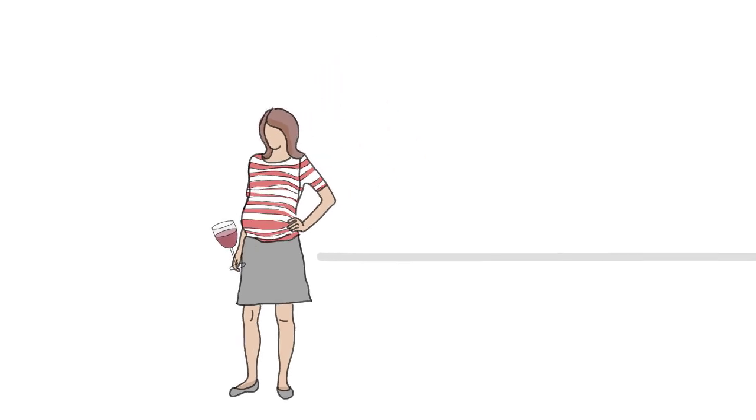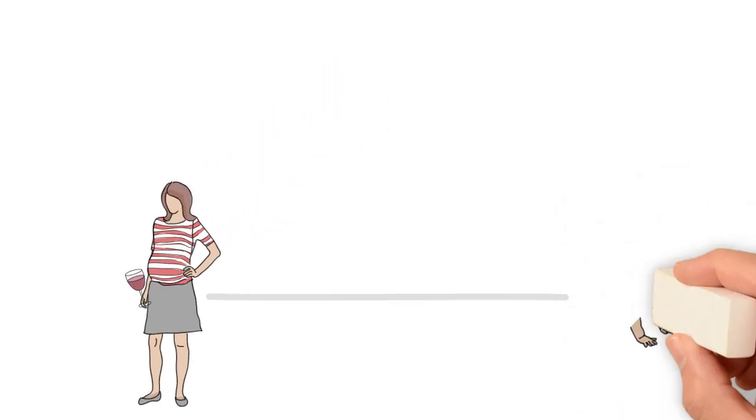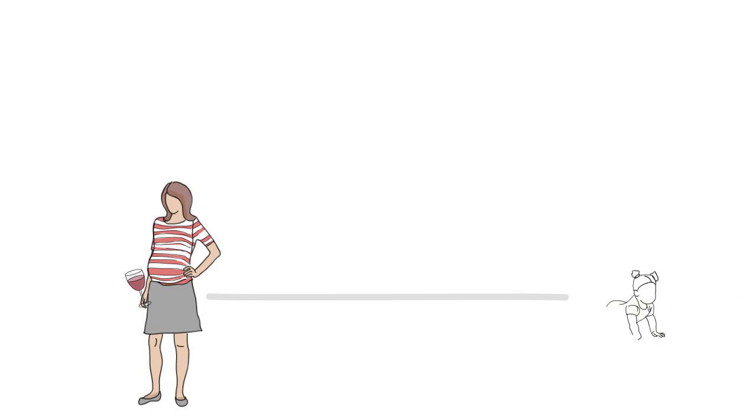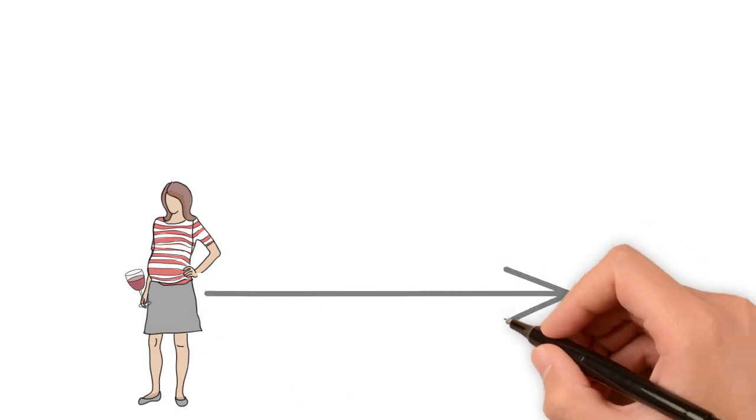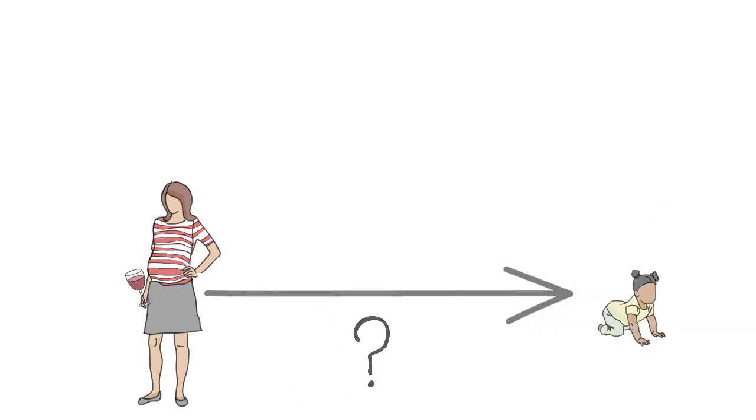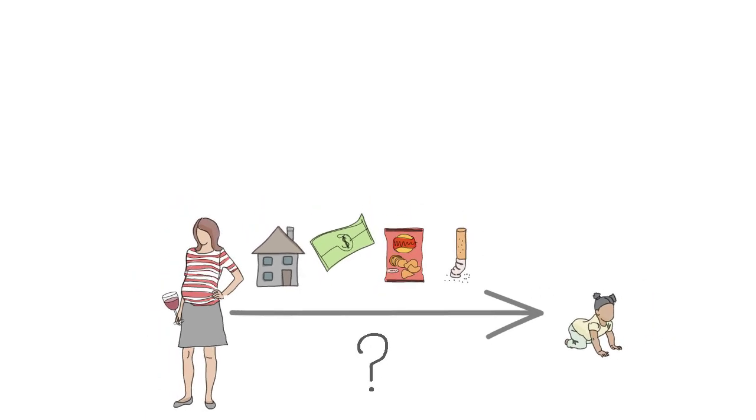For example, it looks like mums who drink a small amount of alcohol during pregnancy tend to have slightly smaller babies than mums who don't drink. But we don't know whether maternal drinking directly increases the risk of a small baby, because other factors could be having an influence, such as socioeconomic position or other aspects of maternal lifestyle and diet.